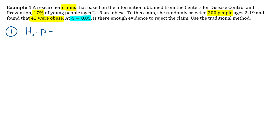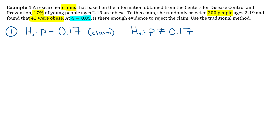Step one is to state our hypotheses. The claim is that 17% of young people are obese, so we'll say p equals 0.17. Make sure you're not using mu anymore — that's only for hypothesis tests about averages. Turn any percents into decimals, so write 0.17, not 17%. Label the claim — that is not optional. For H1, since the claim is that it equals 0.17, the alternative is p not equal to 0.17.